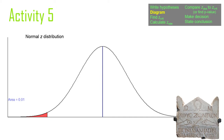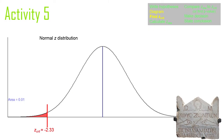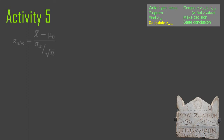Here's the diagram. Alpha equals 0.01, all in one tail. Looking in the z-table for the closest value to 0.01 in the lower tail, we find 0.0099, which corresponds to z of negative 2.33. Or using QNORM 0.01 in R gives the same result. Our diagram shows the critical z-value at negative 2.33.